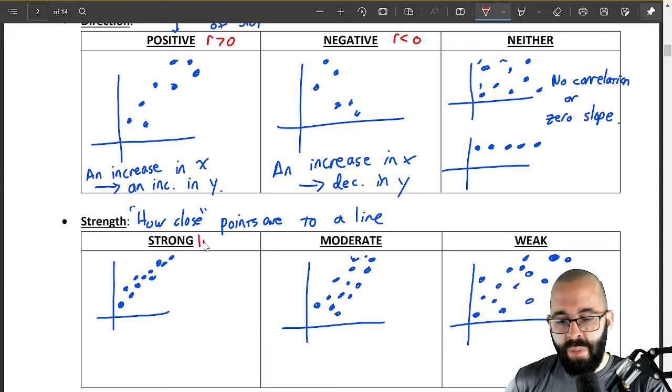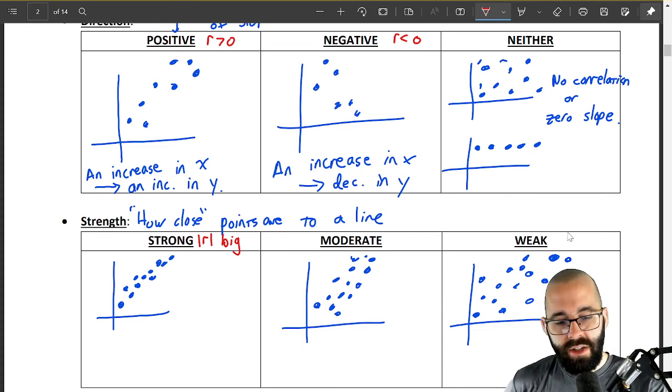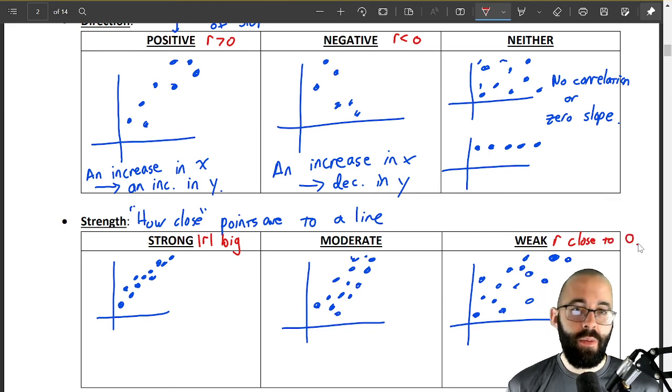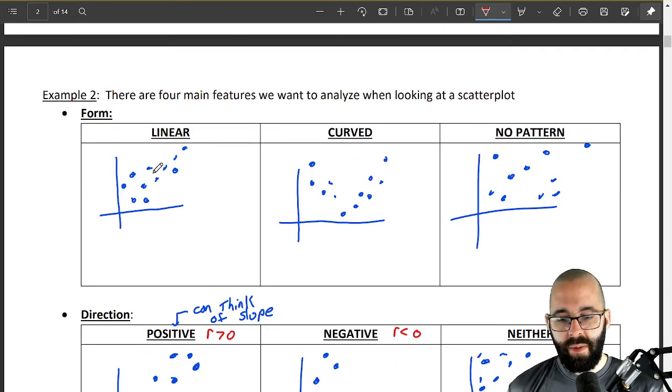Strong correlation has a big absolute value, right? Absolute value of r is big, so that means it's close to positive one or close to negative one. Weak correlation would be r close to zero. It's ways of updating our previous one if you wanted to. That's what r has to deal with. And again, we're only going to be worrying about linear correlation for this. Have a nice day.